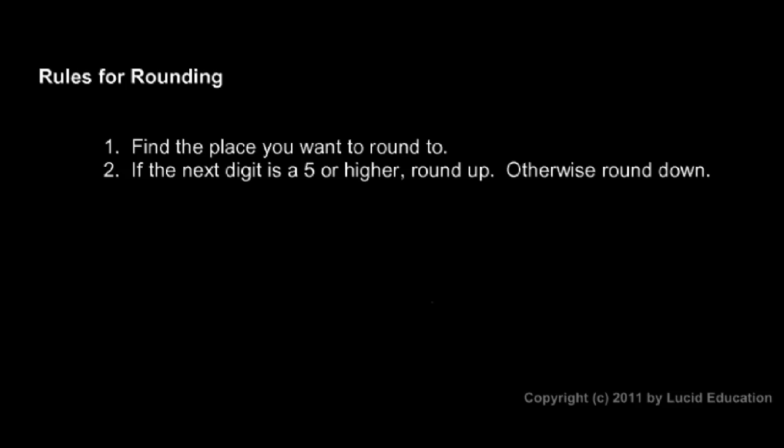The rules for rounding are pretty simple, and if you understand what rounding is these should make a lot of sense to you. The first thing you do is find the place that you want to round to — the tens place, the hundreds place, or so on — and then you look at the next digit. If the next digit is a five or higher you round up, otherwise you round down. We'll look at some examples.